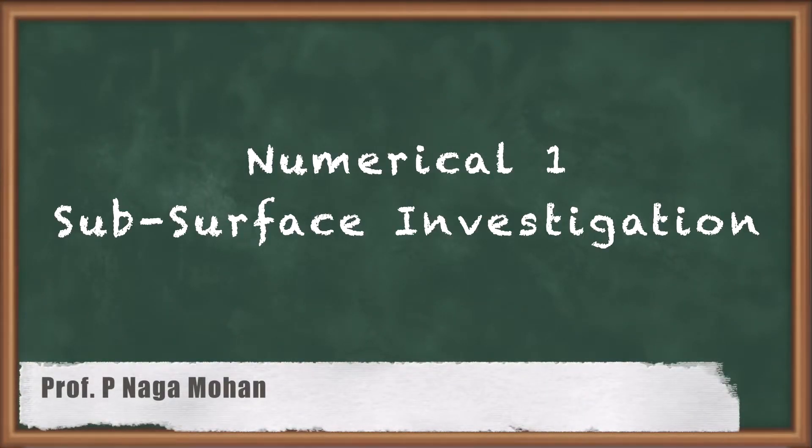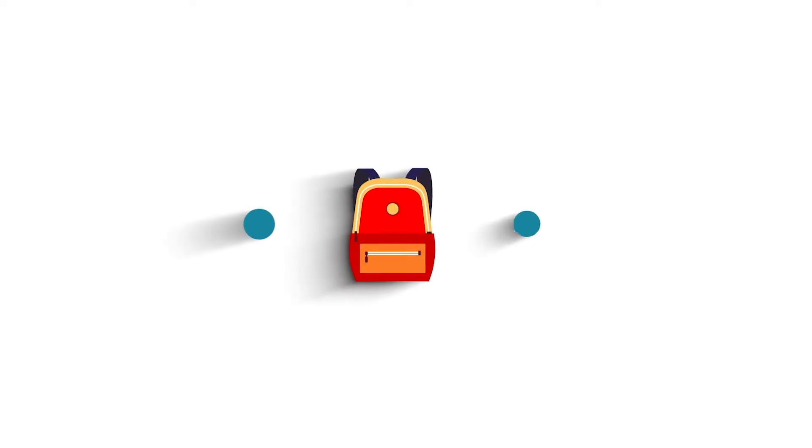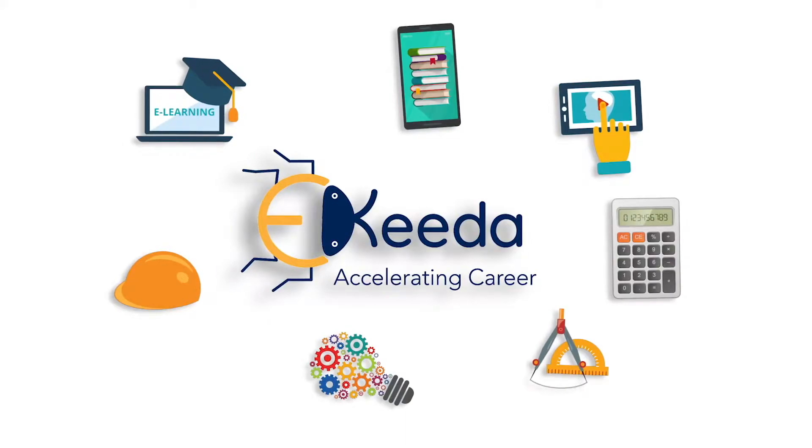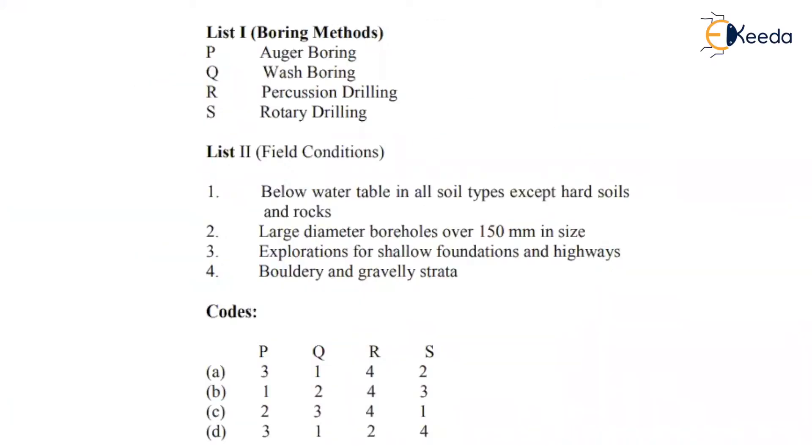Hello friends, let us see some previous GATE questions on this chapter. Most probably we may have the theoretical match the following question type, or else we may have the numerical type. In numerical type mostly they will ask about the inside clearance ratio, outside clearance ratio, like that questions will come. As they are using direct formulas, let us see some theoretical question.